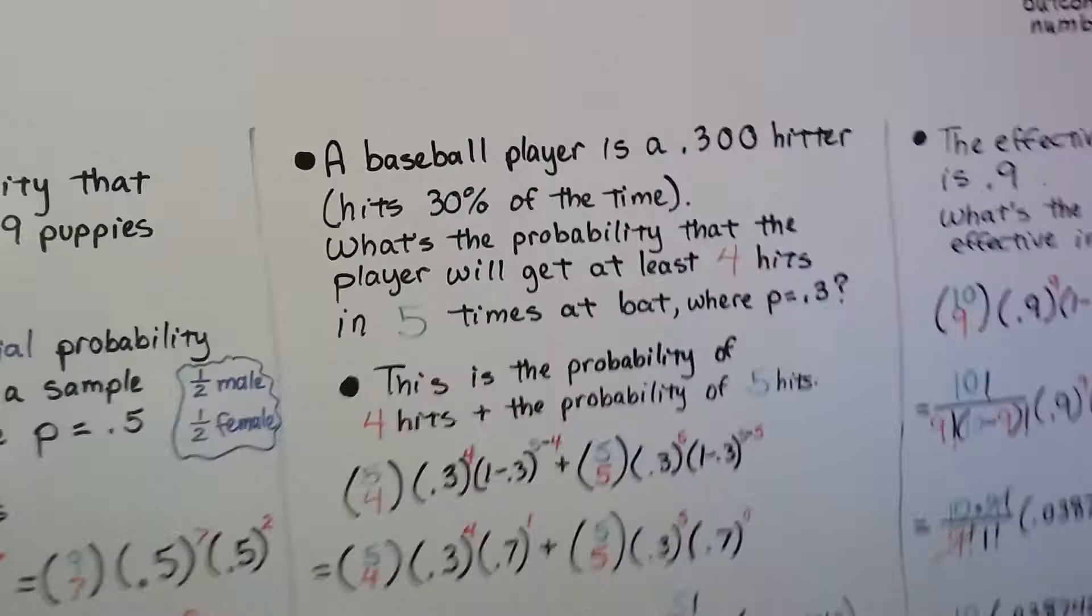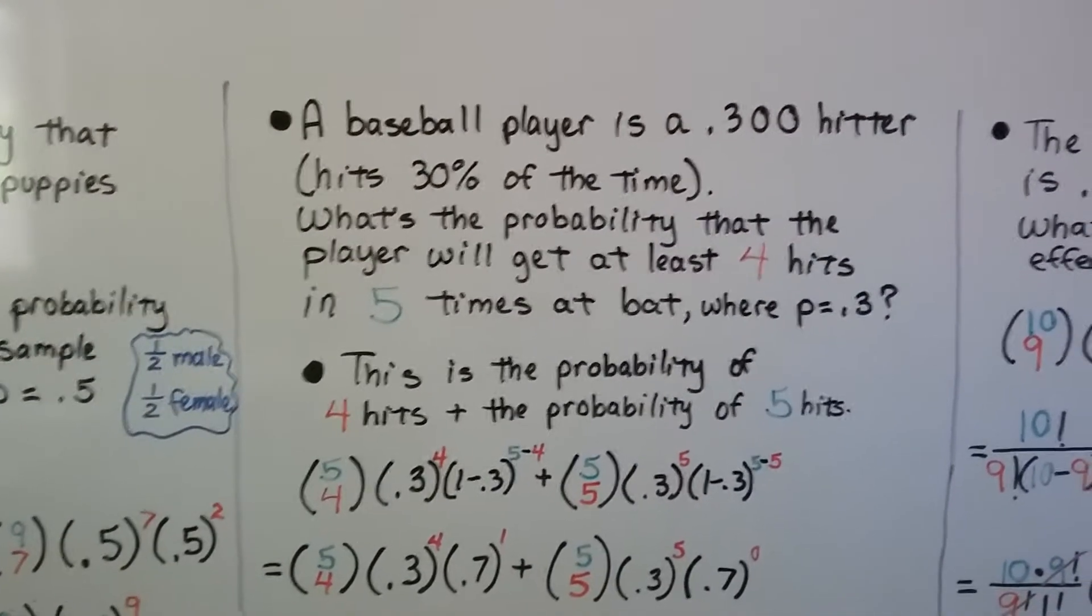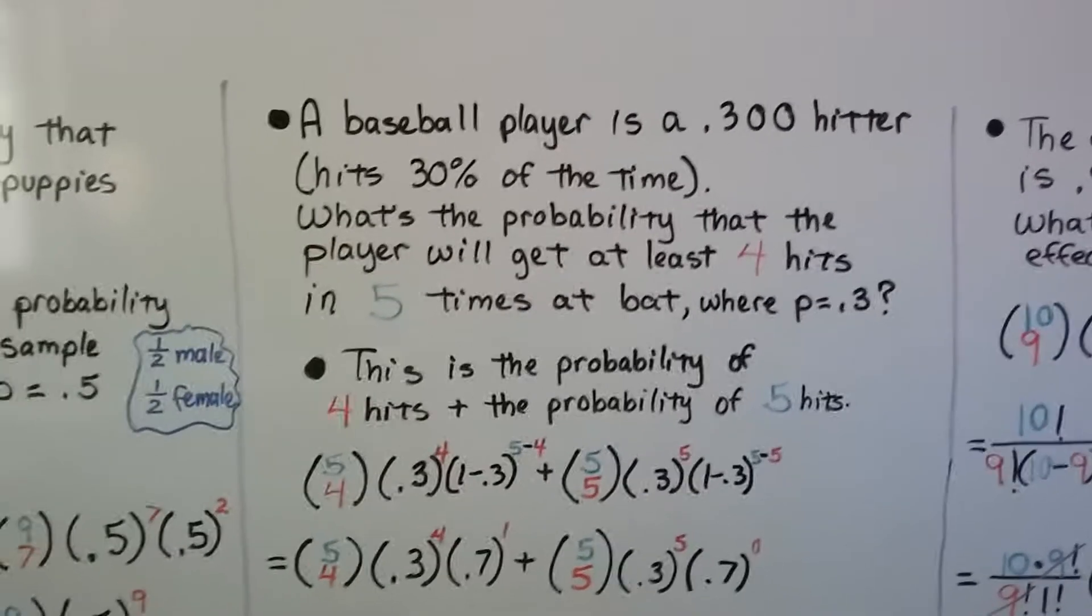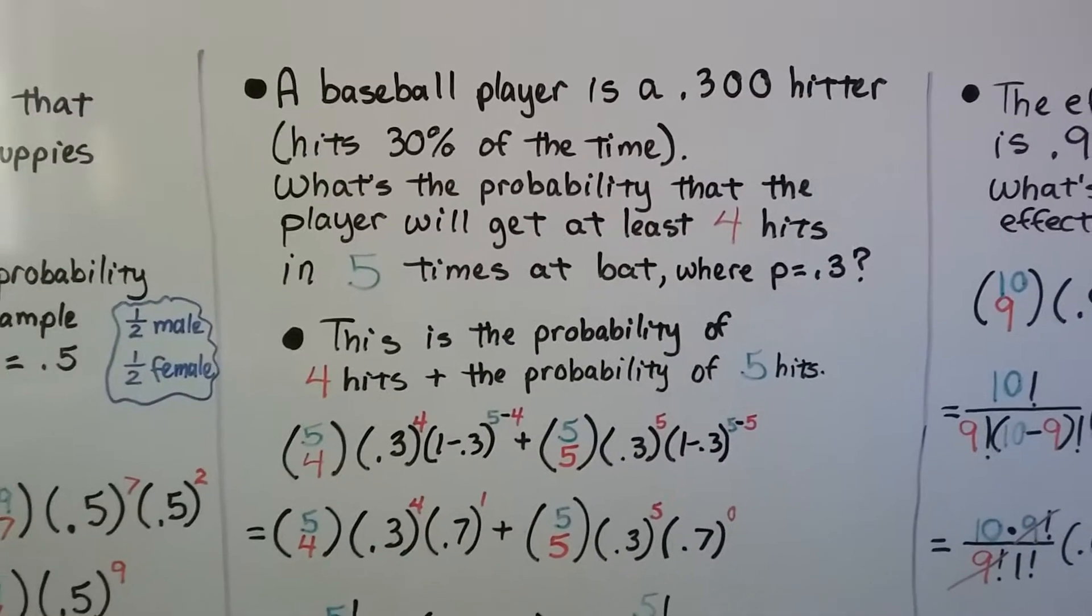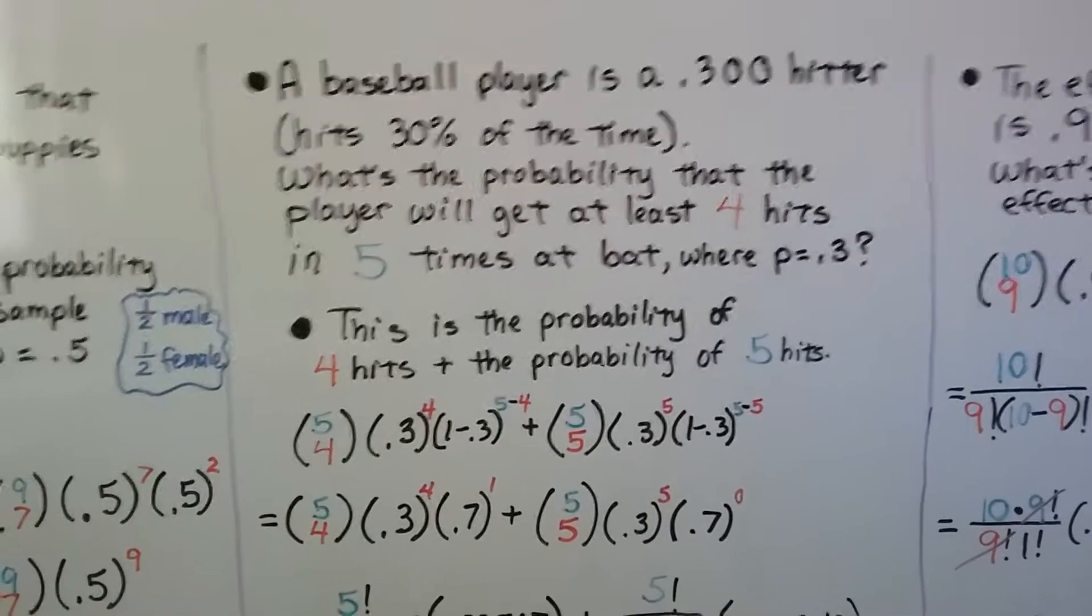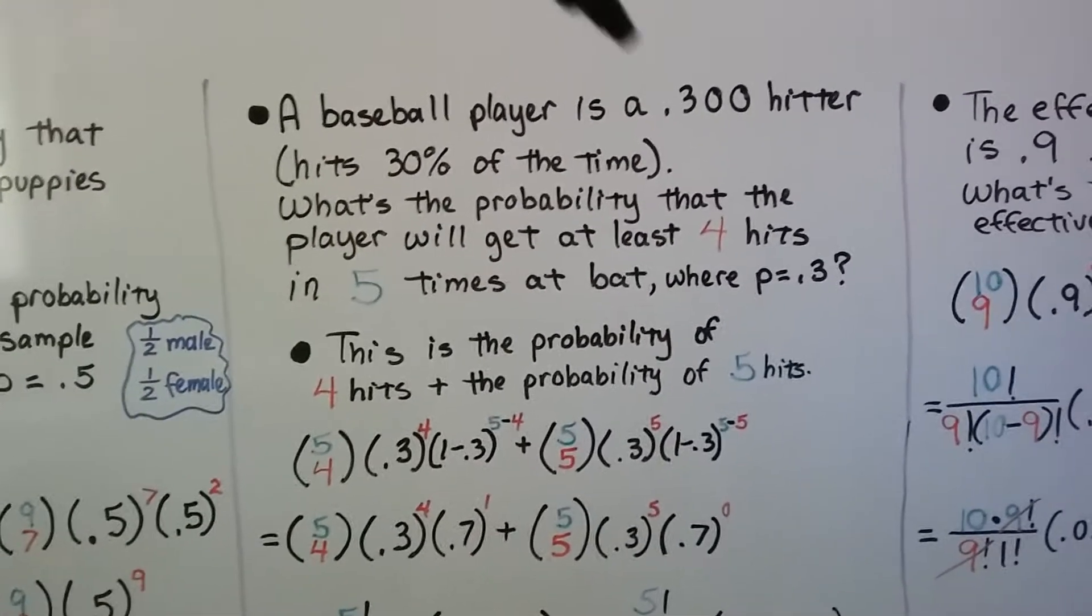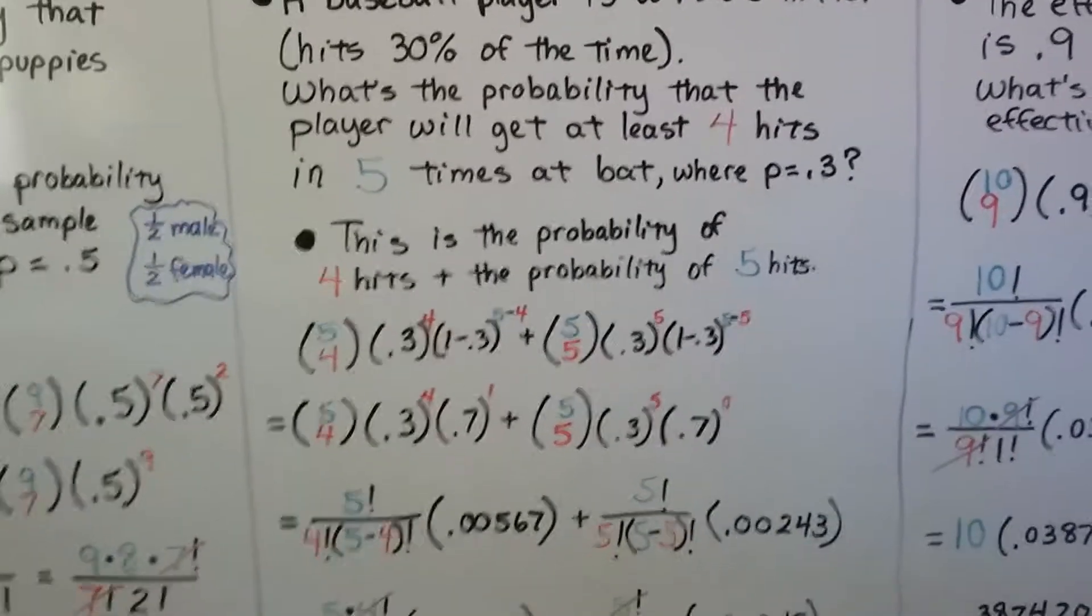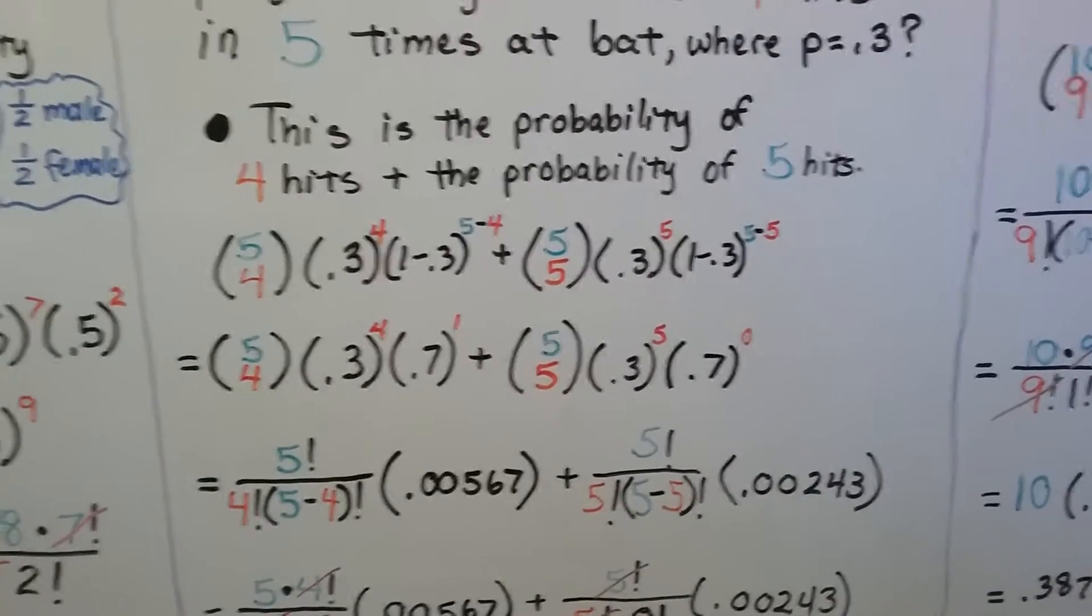Now let me show you another one because this is slightly bit different. A baseball player is a 0.300 hitter. That means he hits 30 percent of the time. And what's the probability that the player will get at least four hits in five times at bat. This is going to be p equals 0.3. This is the probability of four hits plus the probability of five hits.